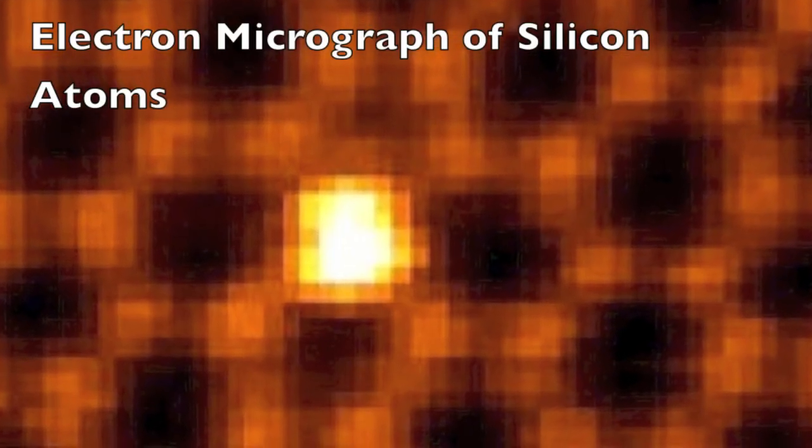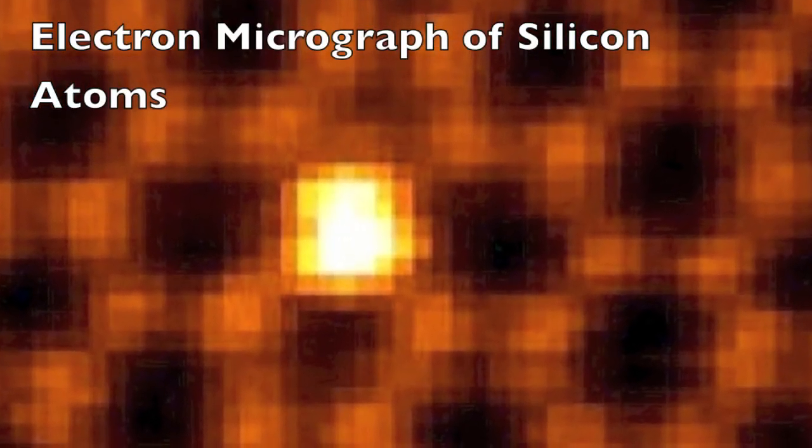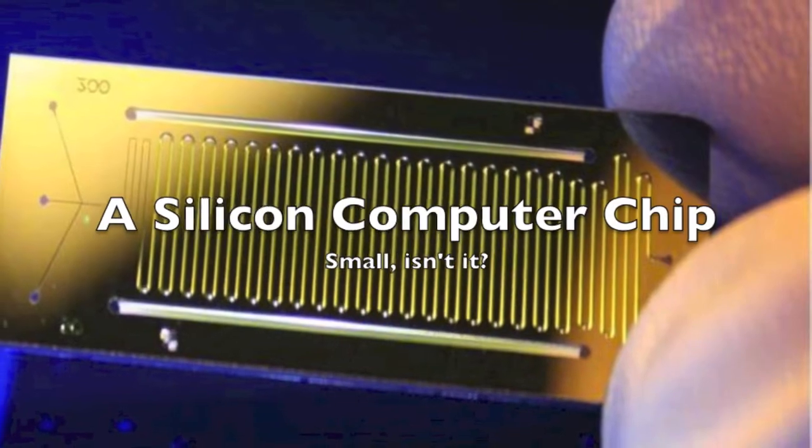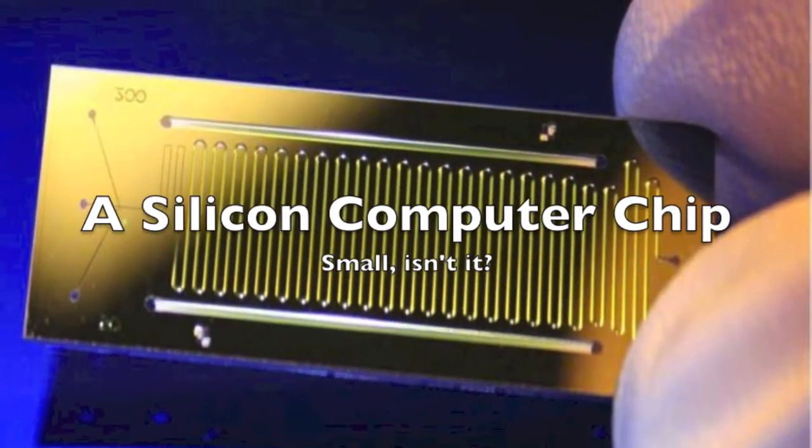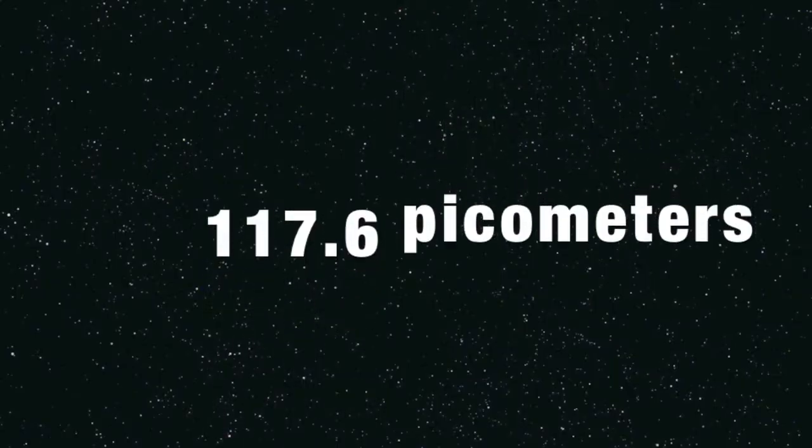To answer that question, we need to look past the microscopic world into the nano world. What you see is a picture of the smallest particle you could call silicon. While this grainy image looks like nothing in particular, it is remarkable since that lump you see is 117.6 picometers wide.